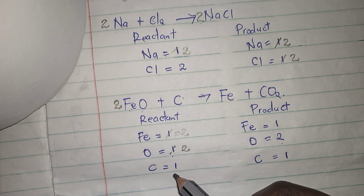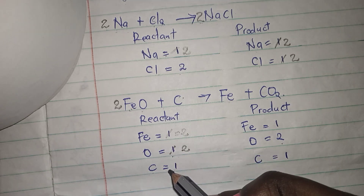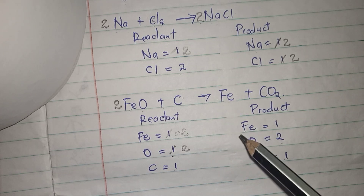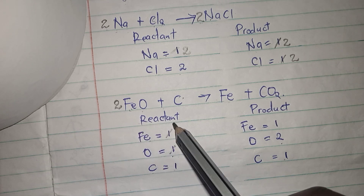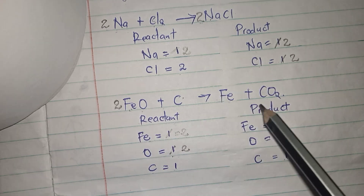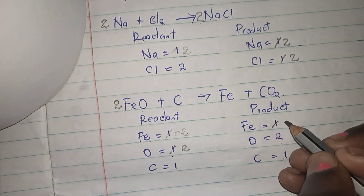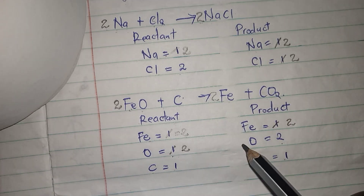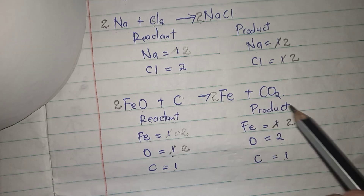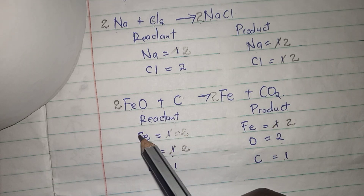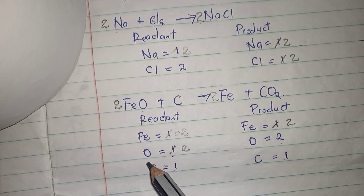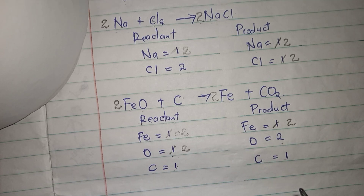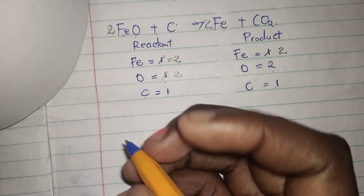My carbon is one on the reactant side and on the product side it's also one. But on this side I now have two irons on the reactant side and only one iron on the product side. To balance it, I also write two over here. Now there are two irons, two oxygens, and one carbon on the reactant side, and on the product side I also have two iron, two oxygen, and one carbon. So my equation is balanced. Let us look at another equation.